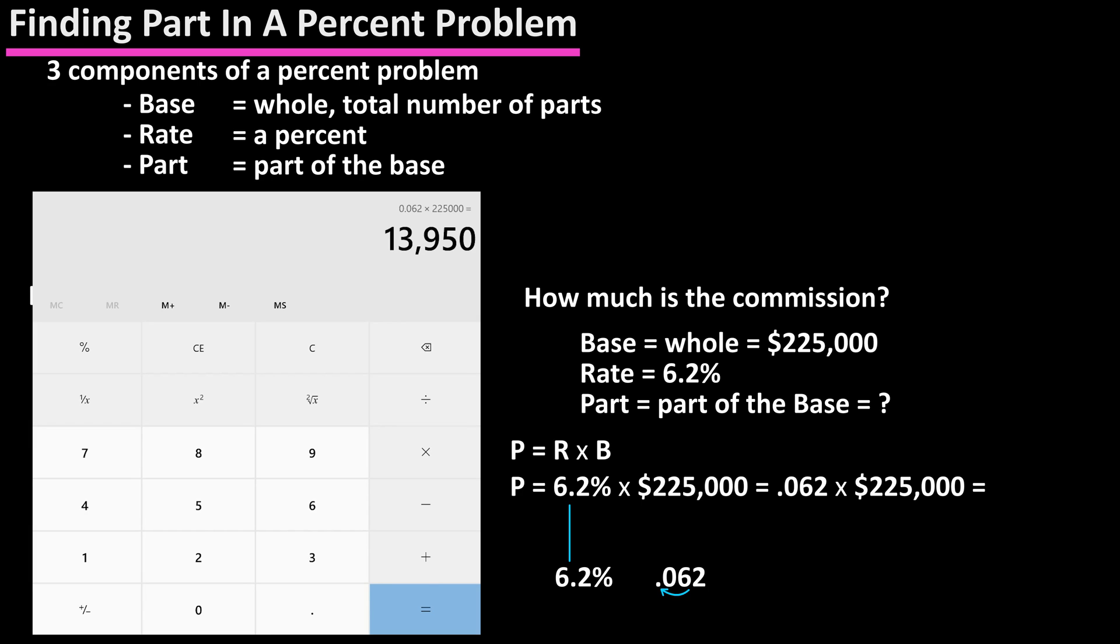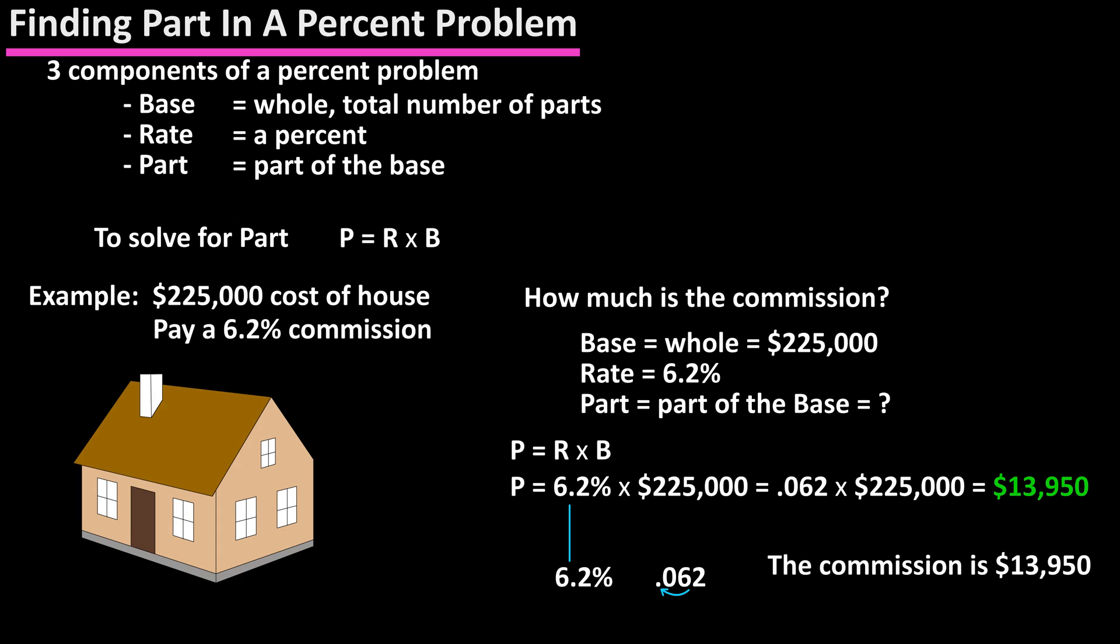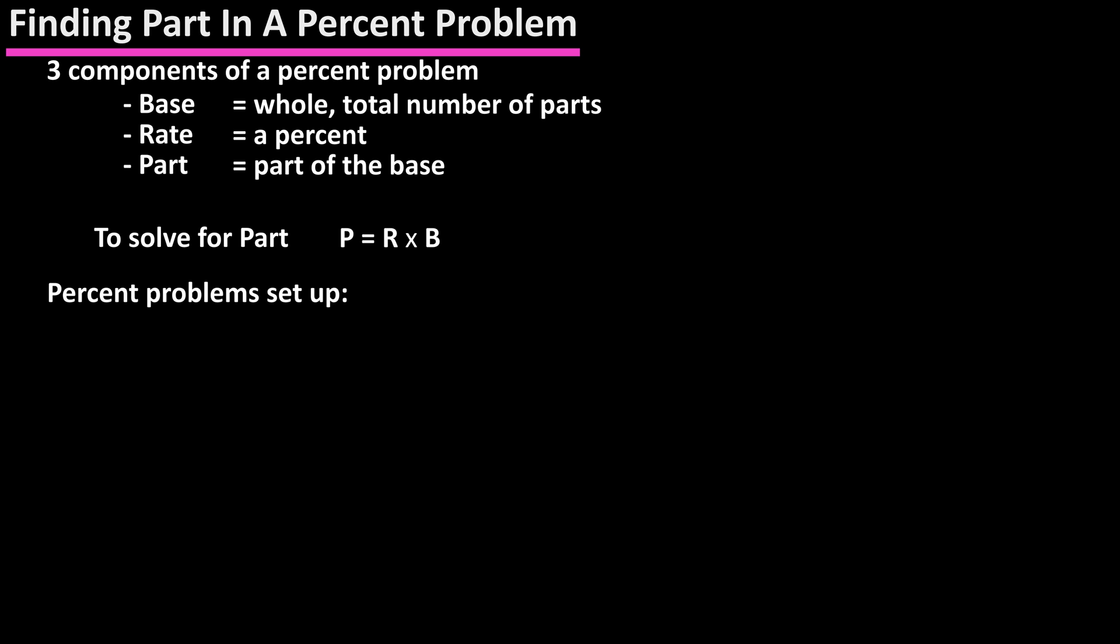Now using a calculator, we have 0.062 times $225,000, which gives us a final answer of $13,950. Many percent problems are set up like this: blank is blank percent of blank. For instance, 14 is 20% of 70.